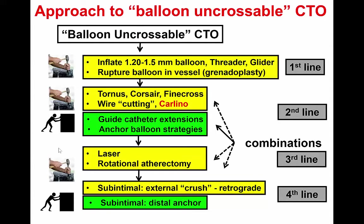Treatment for balloon-uncrossable CTOs can be challenging, and various algorithms can be used. We typically start with a threader or small balloon, which can be ruptured — the so-called grenadoplasty — if the vessel cannot be crossed. Then escalate to more aggressive approaches such as various microcatheters like the Finecross, Corsair, Tornus, or Turnpike Spiral, and sometimes the Carlino technique or contrast micro-injection, in association with guide support techniques such as guide catheter extensions and anchor balloon strategies.